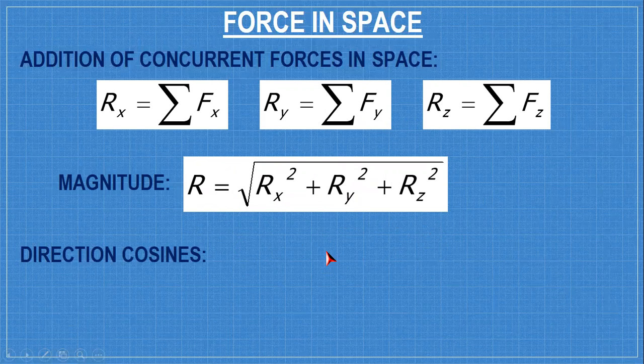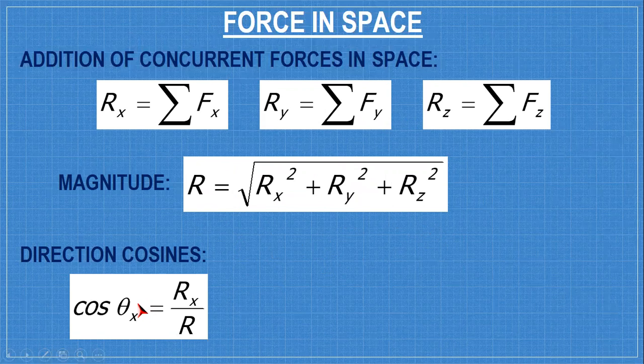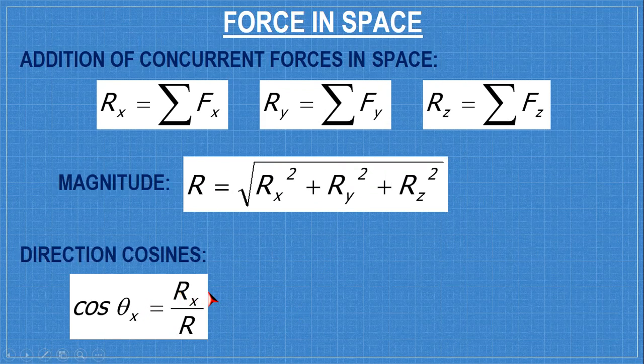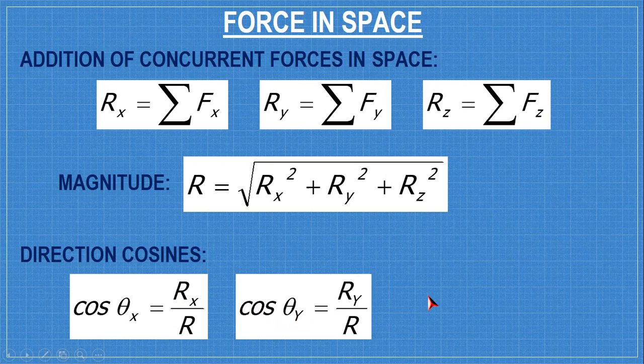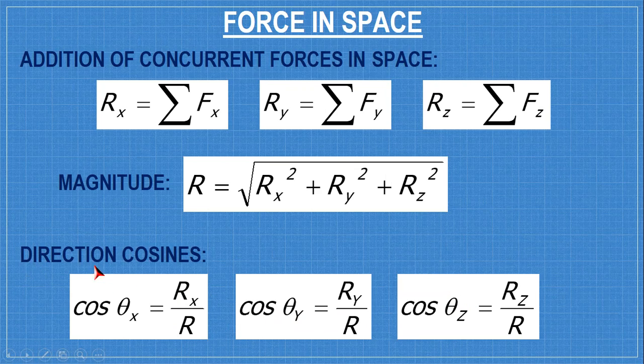For the direction cosine, as I said, cosine theta x equal to Rx over R, also with theta y and theta z. Direction cosine. If you want to solve for the direction angles, you solve for theta x like arc cosine, Rx over R, so with theta y and theta z. That is the direction angle.